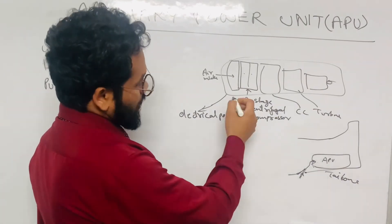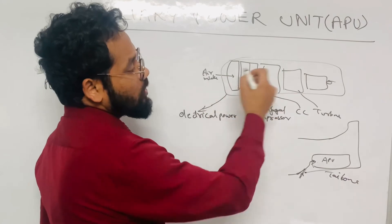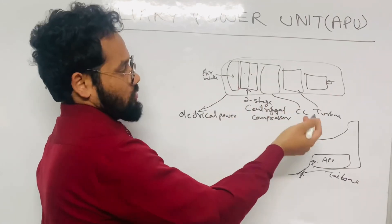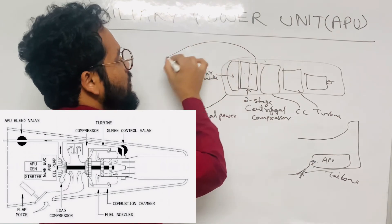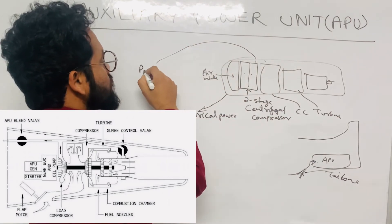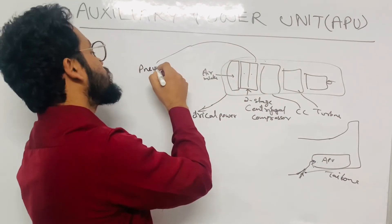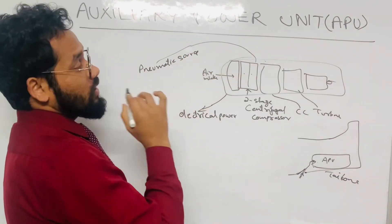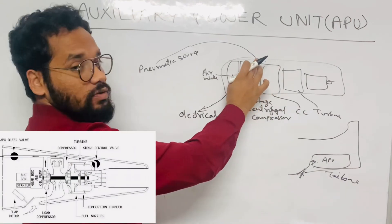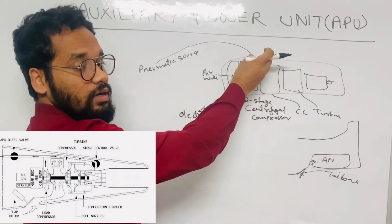And how does it provide pneumatic power? When the APU is in normal operation or operating normally, the air is taken from its compressor stage and fed to the air distribution system. So this will behave like a pneumatic source.